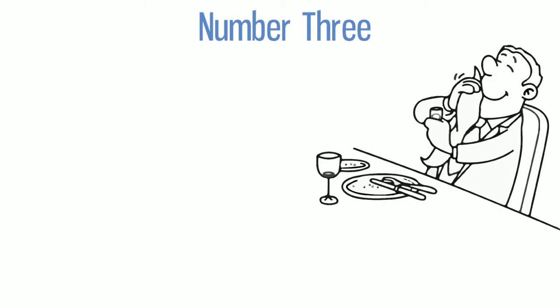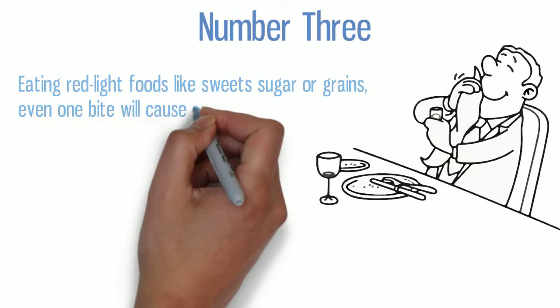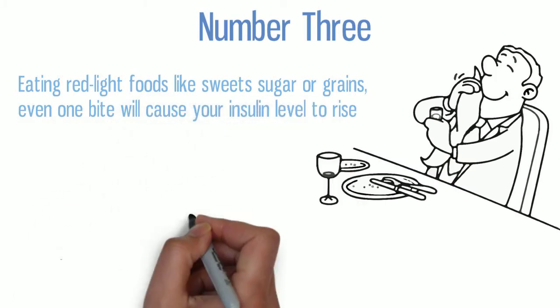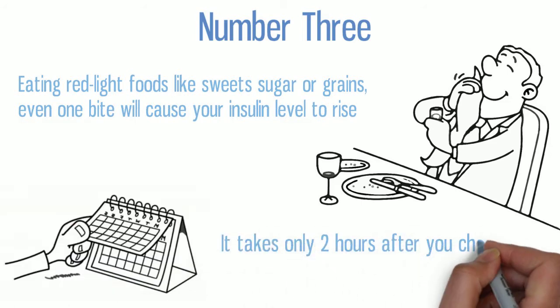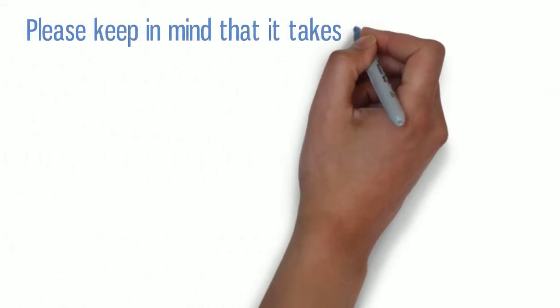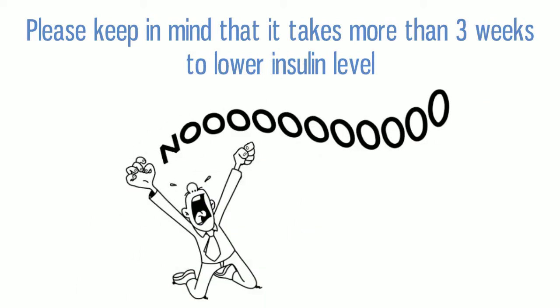Number three, which is very important: while insulin is decreasing, if you cheat by eating red light foods like sweets or grains, even one bite will cause your insulin level to rise. You may spend three weeks trying to lower your insulin level, but it only takes two hours after you cheat for it to climb up again. Please keep in mind that it takes more than three weeks to lower your insulin level. All your efforts will be wasted if you cheat.